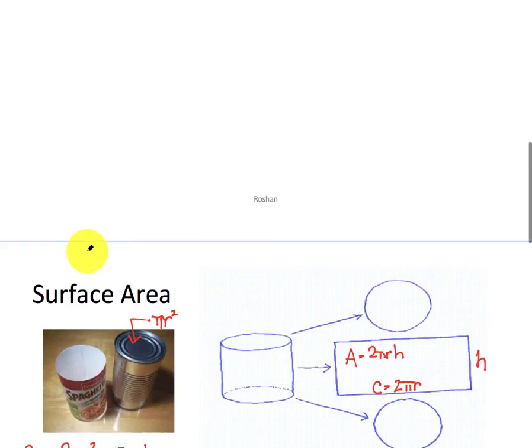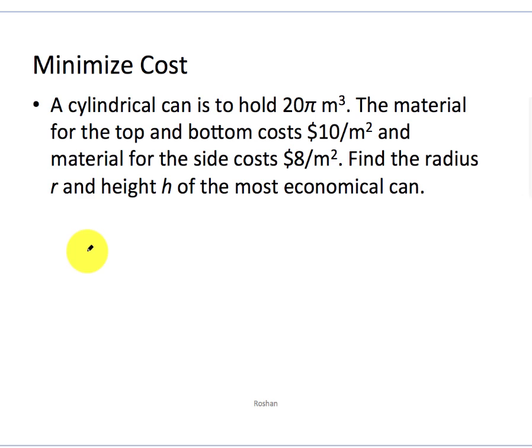Now that I know that, my cost is going to be quite easy to figure out. A cylindrical can is to hold 20π meters cubed. That is my hint that that's a volume type thing. 20π is my volume and my volume is πr²h, right? That's the volume of a can. We have the base times the height, πr² times h.